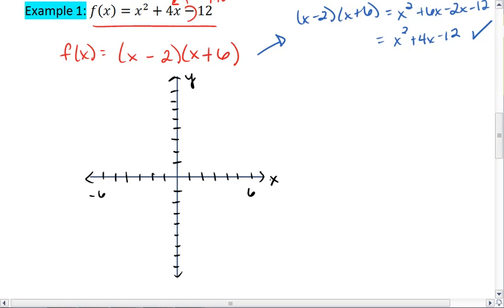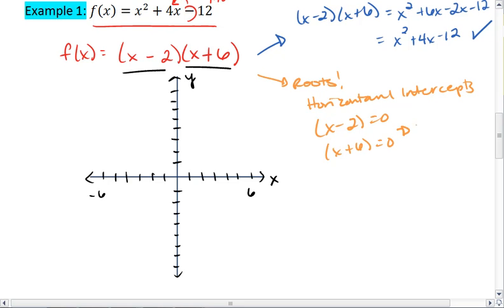Our factoring tells us where we have roots, or horizontal intercepts. So we set each factor to be 0. And we find that either x equals a positive 2, or x equals negative 6. And if either one of these is true, that will make one of our factors 0. And we know anything times 0 is 0, so that will make our output 0.